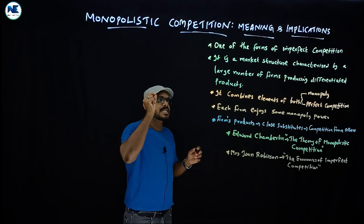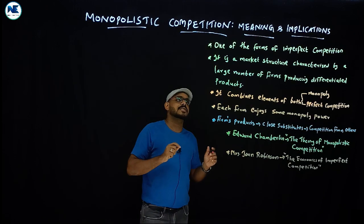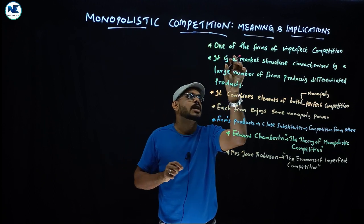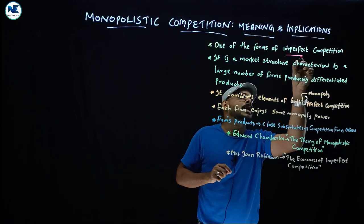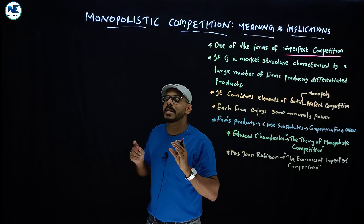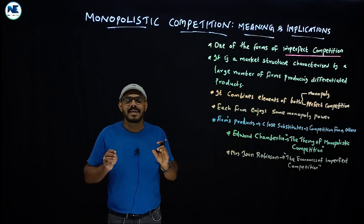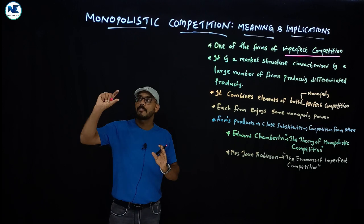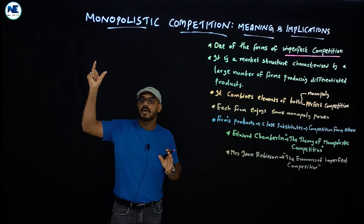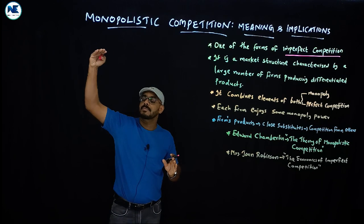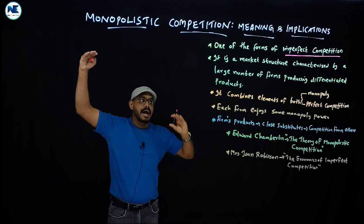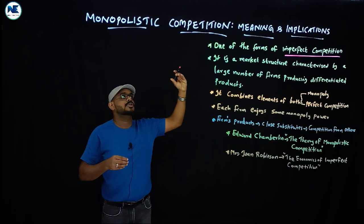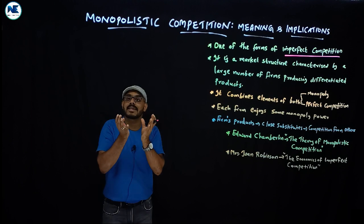From an examination point of view, monopolistic competition is one of the forms of imperfect competition. Perfect competition is one extreme form of market; another extreme form is monopoly, where we can see a single seller who is the price maker.